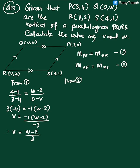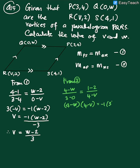Okay, and then from equation 2, I have 4 minus W over 3 minus 0 equal to 1 minus 2 over 4 minus V. You just use the formula for the gradient. Okay, so I have now 4 minus W multiply 4 minus V equals negative 1 multiply 3. Correct class?